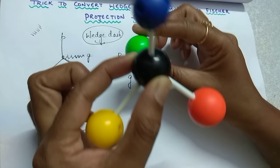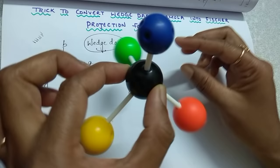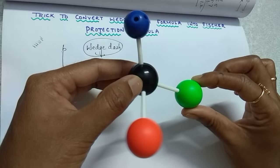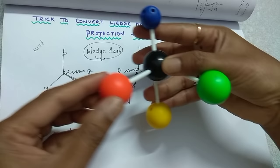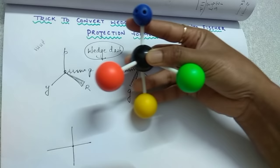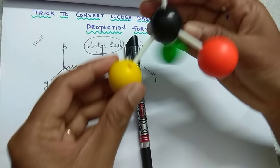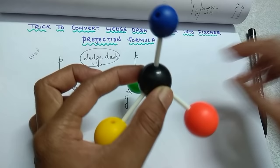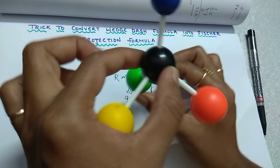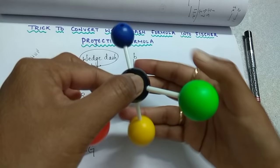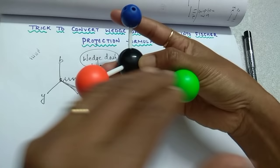What you need to do to convert the wedge structure into Fischer: the rule is, whatever the back group is present, that back group you have to bring to the front. This back group — the green colour group — you have to bring it to the front like this. Now you hold and see: this is a vertical line and this is a horizontal line. The groups you are getting here are: blue, yellow, red, and green. Very, very important — you have to hold like this and bring that back green colour group to the front, rotate like this, then see in such a manner — this is the vertical line and these are the horizontal lines. You have to write as it is.